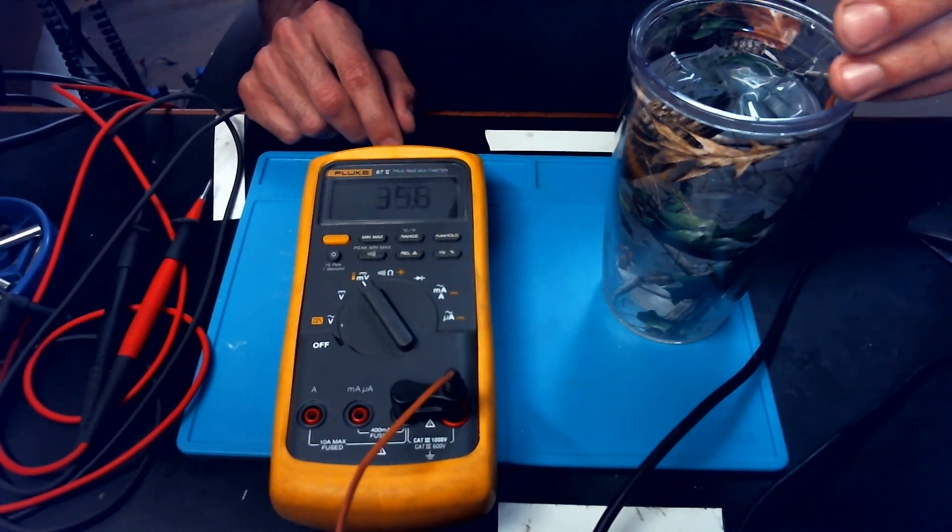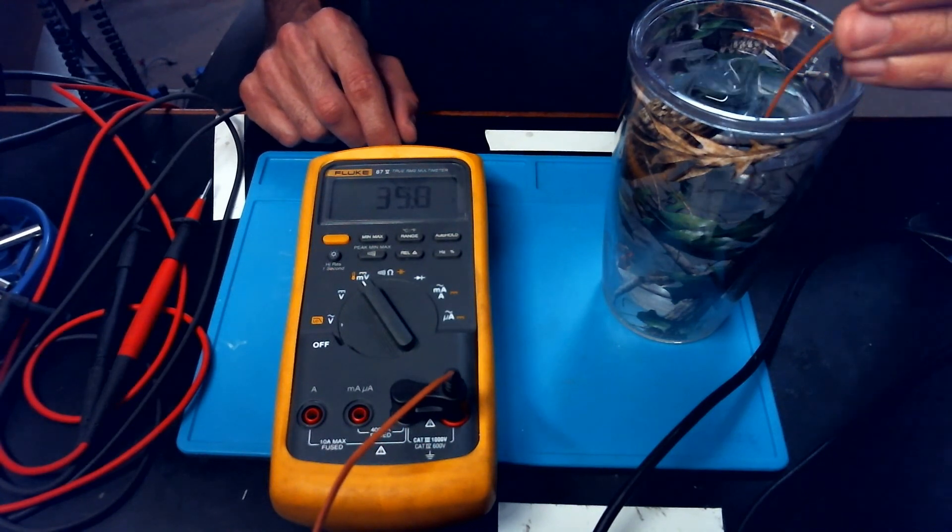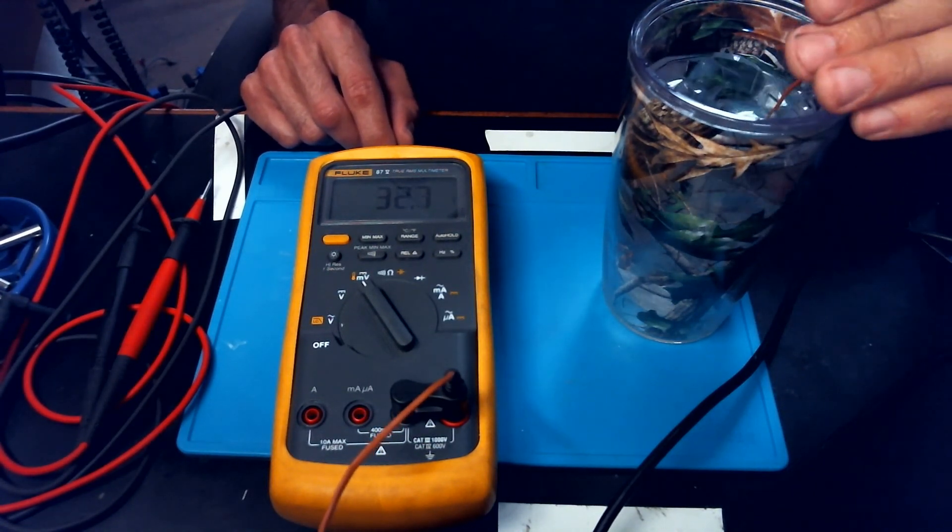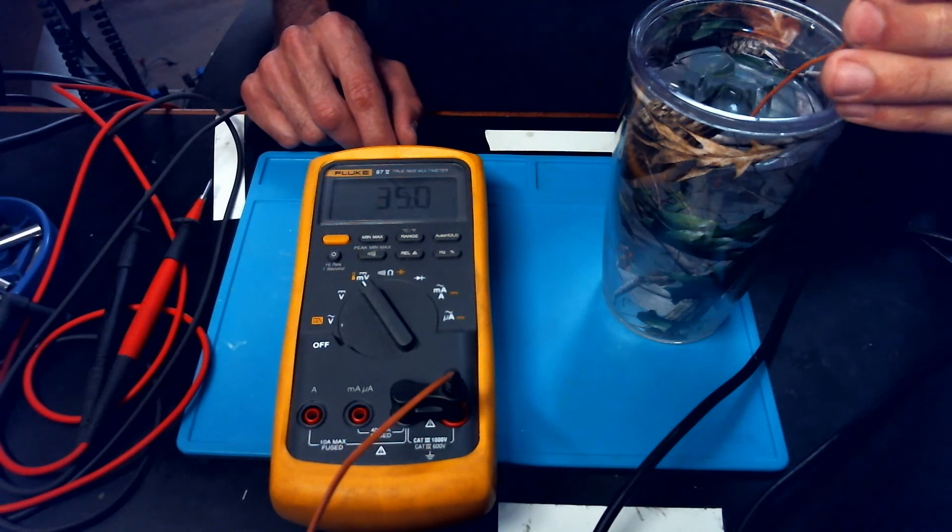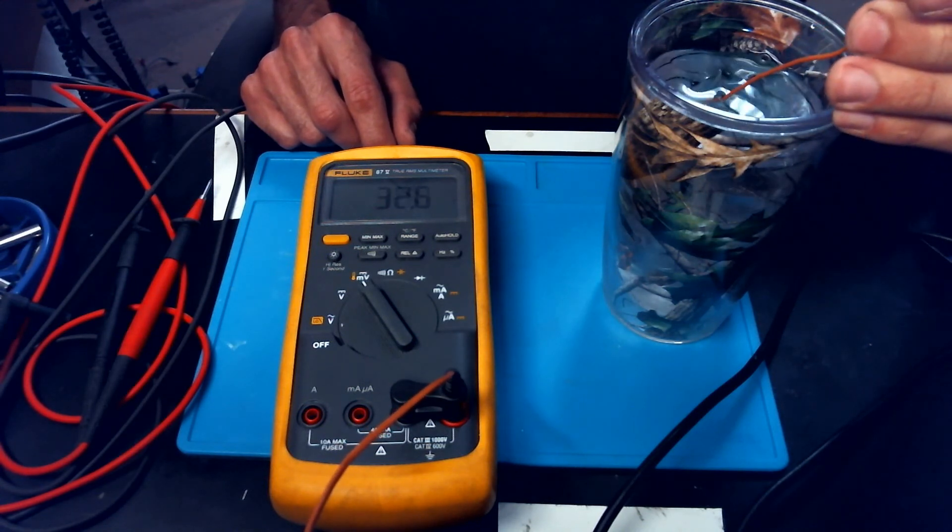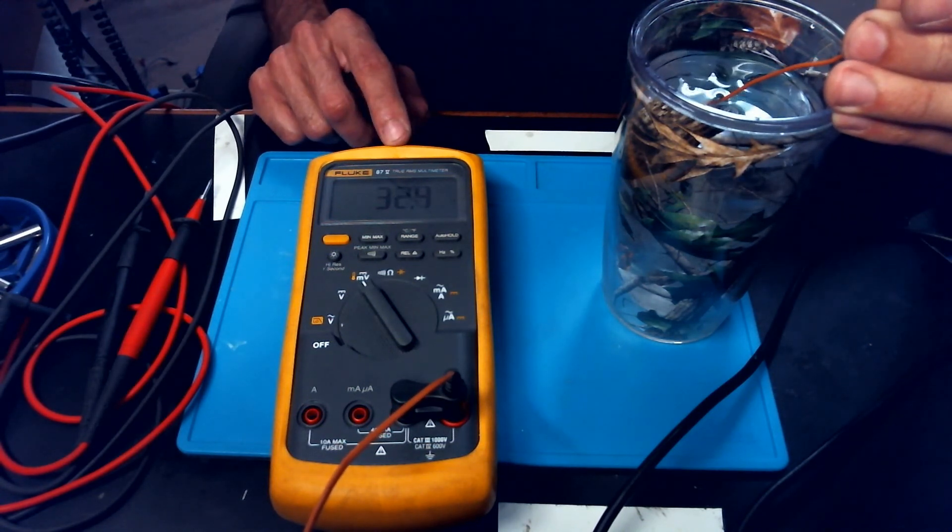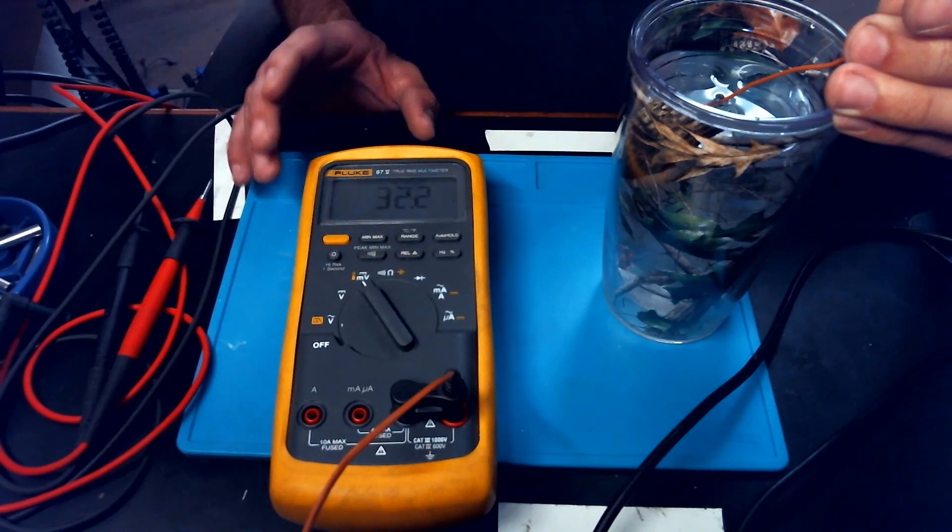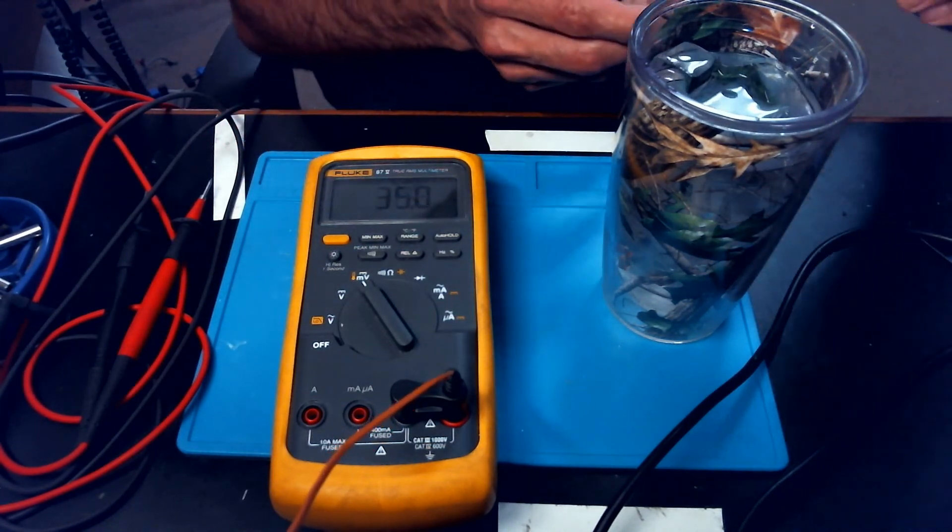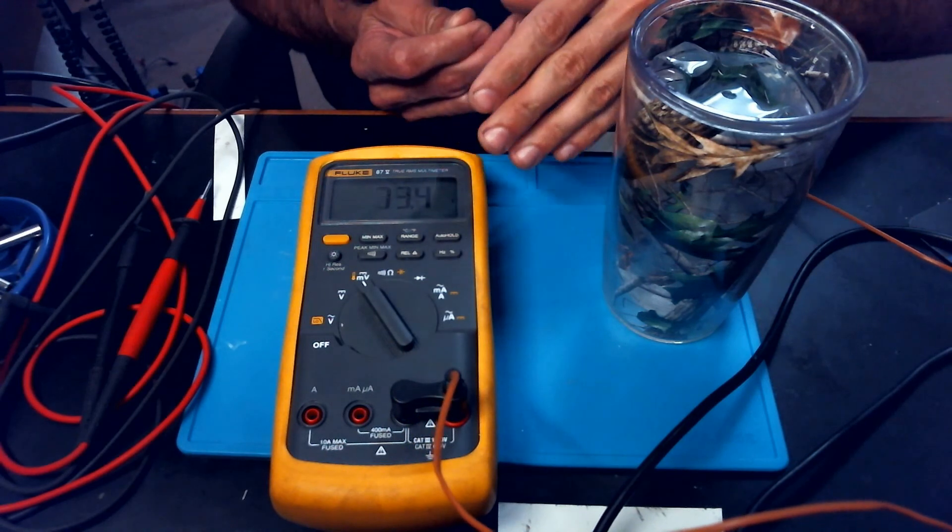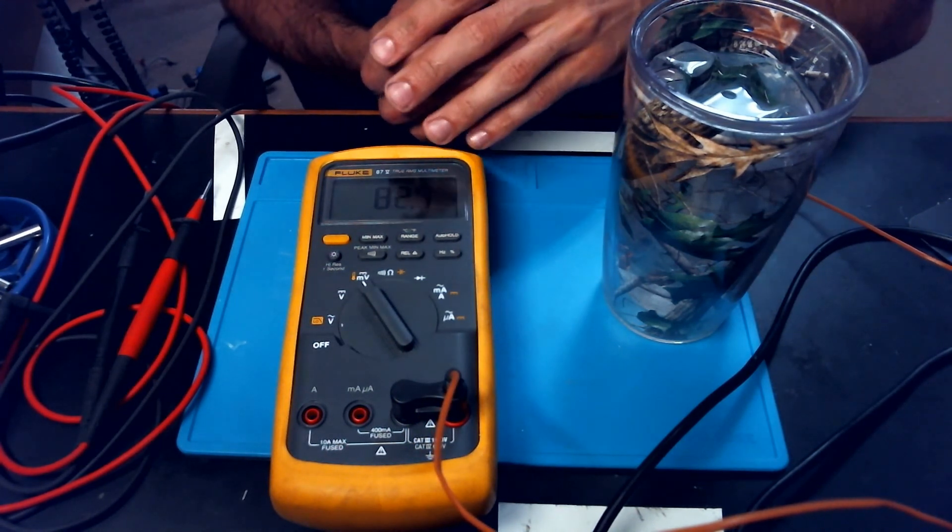So we're looking for about 32 degrees. You can actually get a piece of ice there, 32.65, and you can see that it has a really fast response time on temperature. Some of that is going to be due to the meter, and some of it's going to be due to the thermocouple.